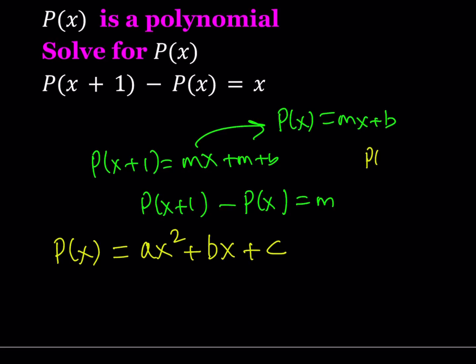So you can test it out. For example, suppose you have P of X equals X squared. Let's go ahead and make a quick table, like an XY table. For 1, it's 1. For 2, it's 4. For 3, it's 9. And then for 4, it's going to be 16.